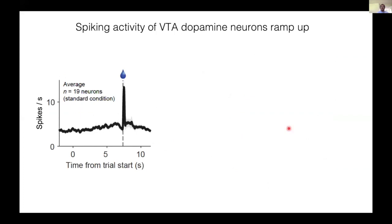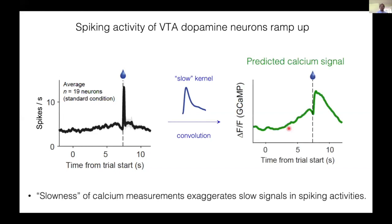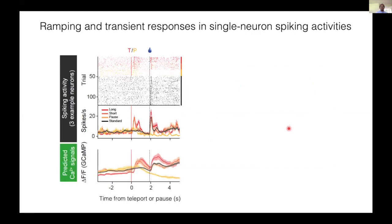This small ramp was observed also in the average population activity. At a glance, this ramping appears to be very small compared to the ramping observed in axonal calcium signals. However, if we convolve this spiking activity with a slow kernel reflecting slowness of calcium signals, the appearance of these signals became much closer to the axonal calcium signals.